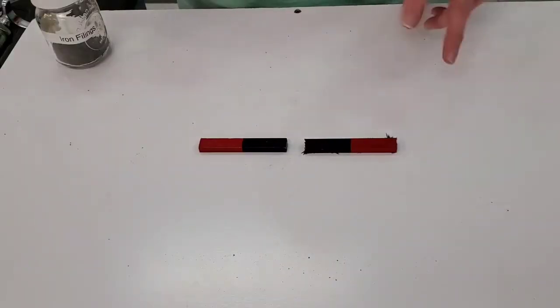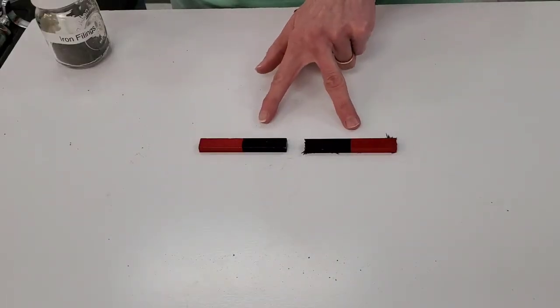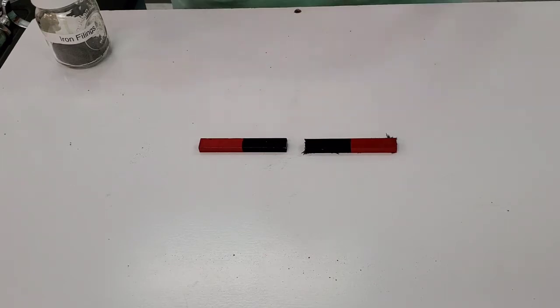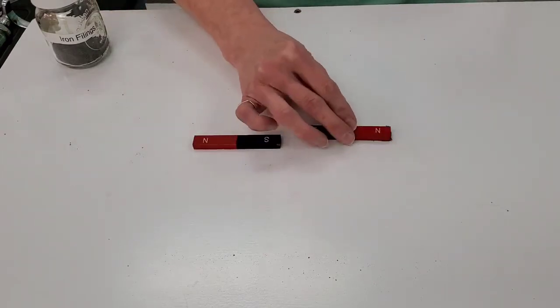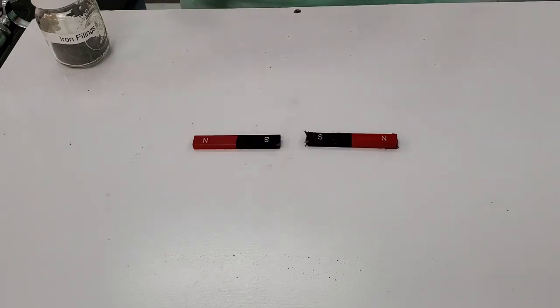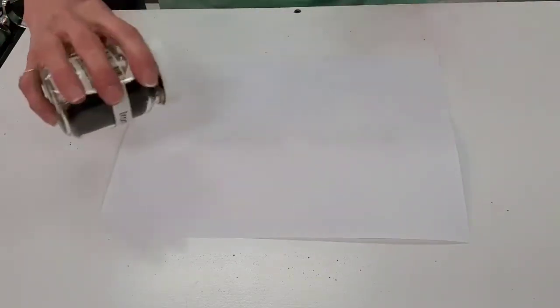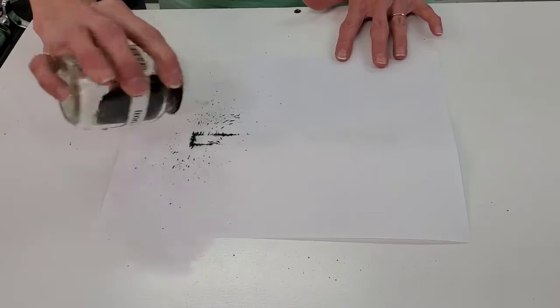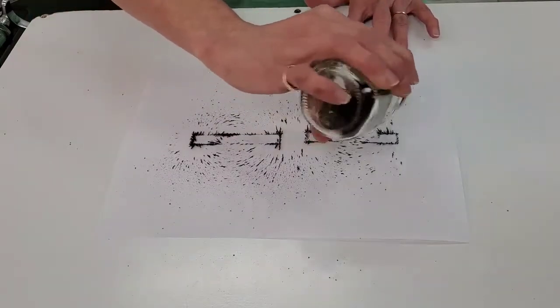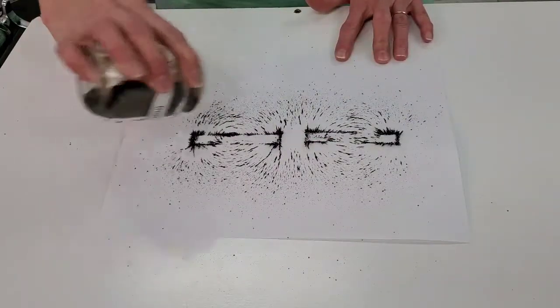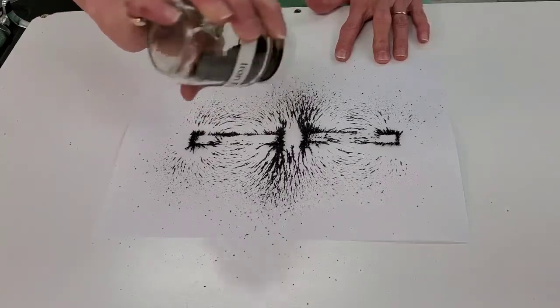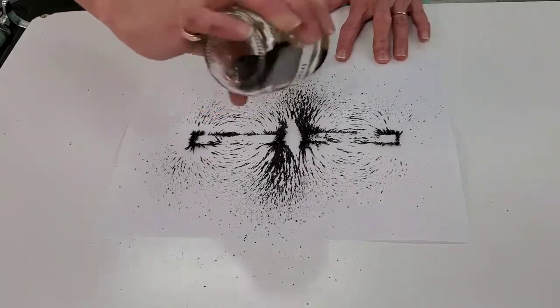Now let's look at how the iron filings or how they take shape when we have two like poles facing each other. As we add the iron filings, look what happens to the magnetic field lines when two like poles are placed next to each other.